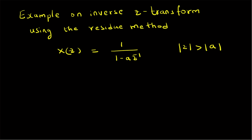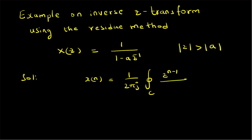We use the formula based on Cauchy's integral theorem. We start with the definition of the inverse z-transform: x(n) = (1/2πj) times the closed contour integral over contour C of z^(n-1) times X(z), that is 1/(1 - az⁻¹), dz.